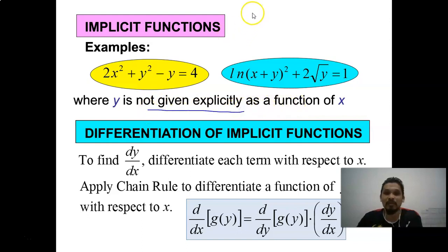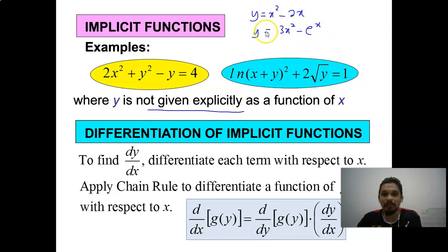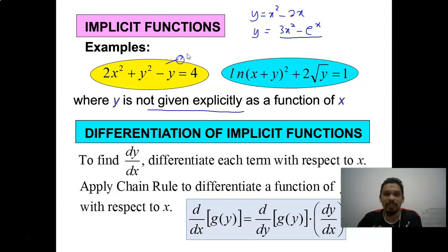Most of the time we look at functions like y = x² - 2x or y = 3x³ - e^x, where on the left side we have a single y and on the right side all terms are in x. But for 2x² + y² - y = 4, we cannot form this in the form of y = f(x) because we have both y² and y terms.